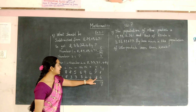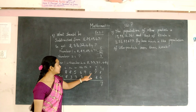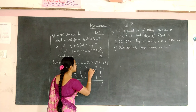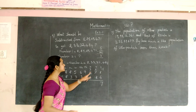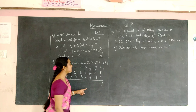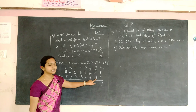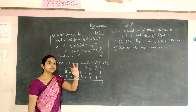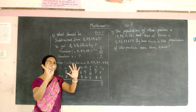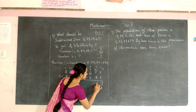Here also 8 is greater than 6, so we cannot subtract. Borrow 1 from 4 — so 4 becomes 3 and 6 becomes 16. Start counting from 8 until you reach 16: 9, 10, 11, 12, 13, 14, 15, 16. The number we got is 8.